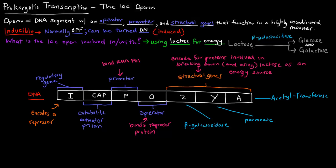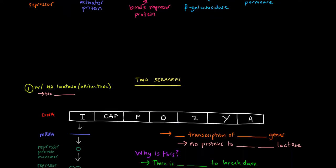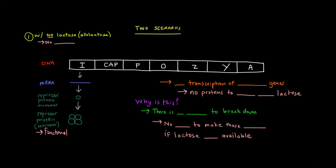The lac operon is a regulated operon, and specifically it's inducible — dependent upon environmental changes — and it's involved in using lactose for energy. There are two scenarios to consider. The first is when there's no lactose around. Lactose or allolactose is the inducer of the system, so if there's no lactose around, there is no inducer.